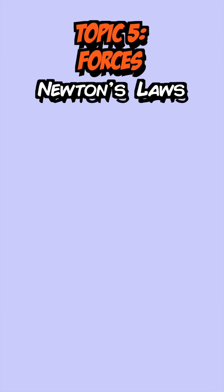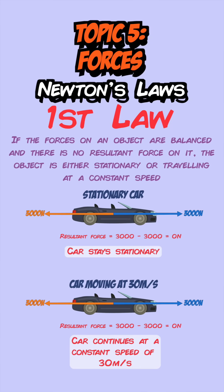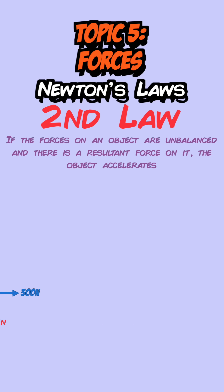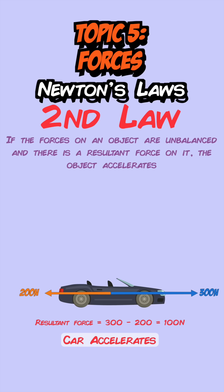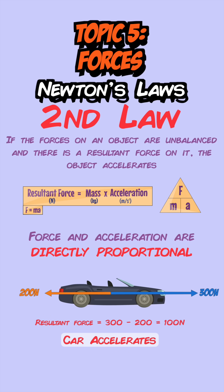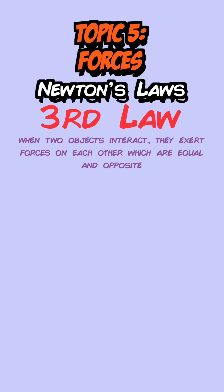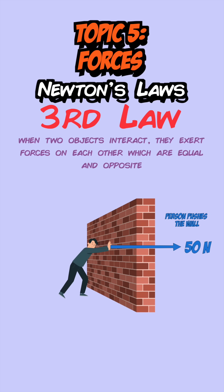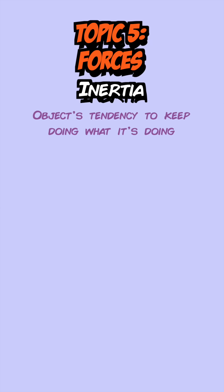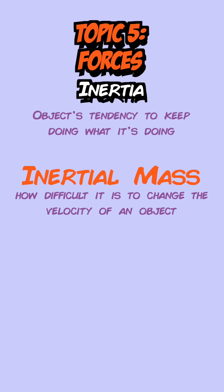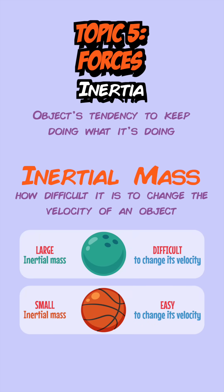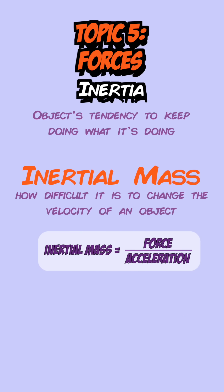Newton's first law states that if the forces on an object are balanced with no resultant force, it's either stationary or traveling at constant speed. The second law states that if the forces are unbalanced there is a resultant force and the object accelerates — force and acceleration are directly proportional. Newton's third law states that when two objects interact they exert equal and opposite forces on each other. Inertia is an object's tendency to keep doing what it's doing, and inertial mass is defined as the ratio of force over acceleration.